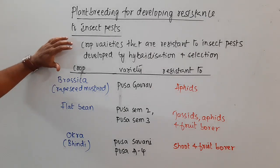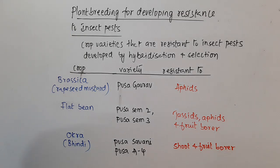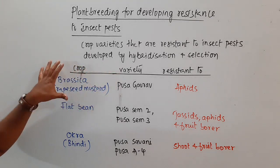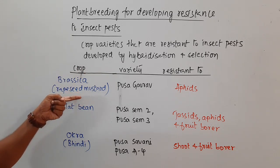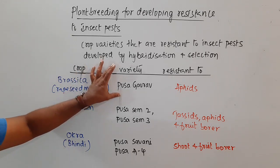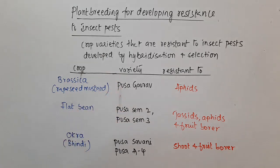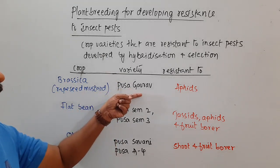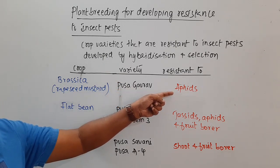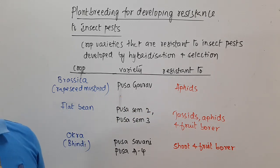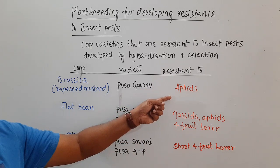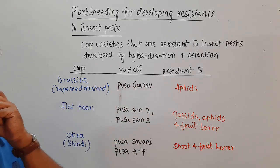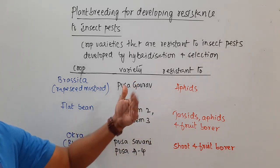Some crop varieties that are resistant to insect pests have been developed by hybridization and selection procedures. In Brassica, commonly called rapeseed mustard, a variety called Pusa Gaurav was developed. This variety is resistant to aphids. Aphids are also tiny insects that feed on plant sap — they draw plant sap causing the plant not to grow properly, which may lead to death and significant crop loss.